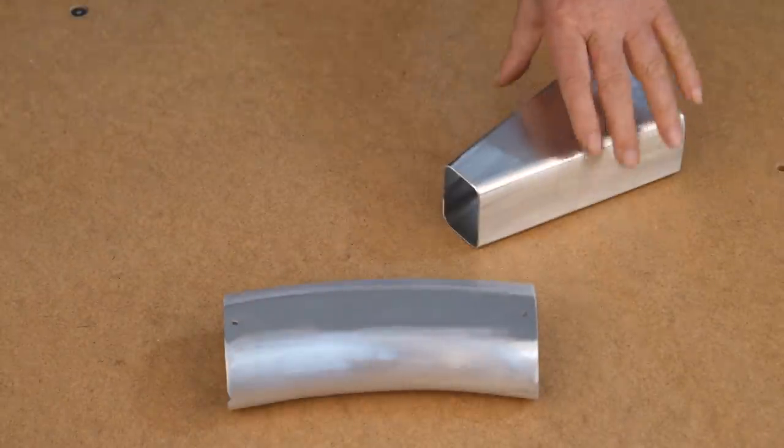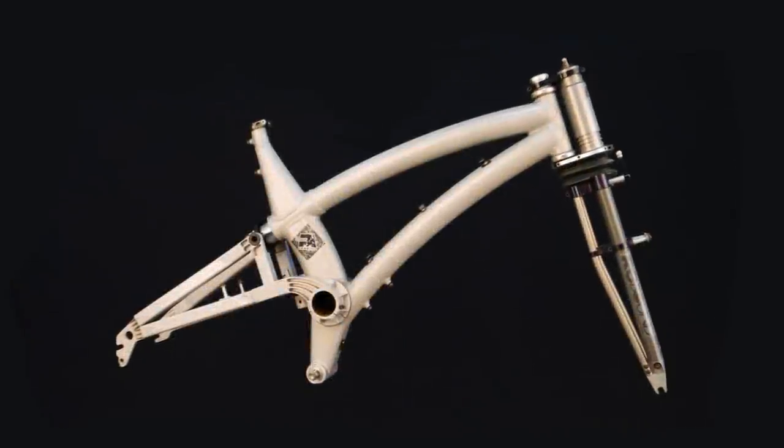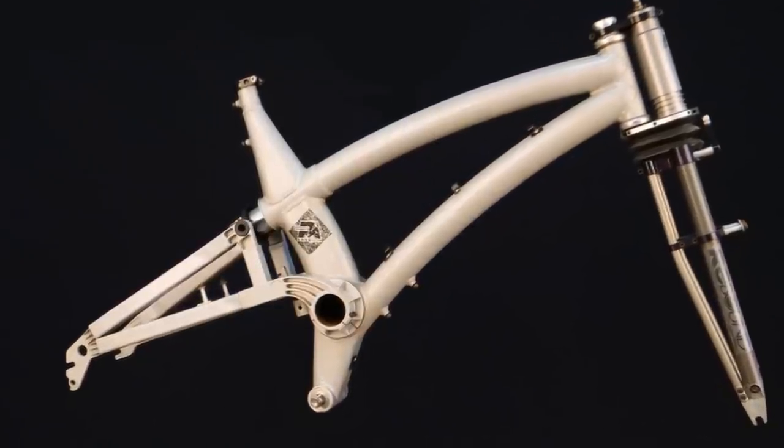In part one I made the monocoque sections for the frame. This time I'll curve the round tubes for the frame and make the fixture which holds all the components in the proper orientation.